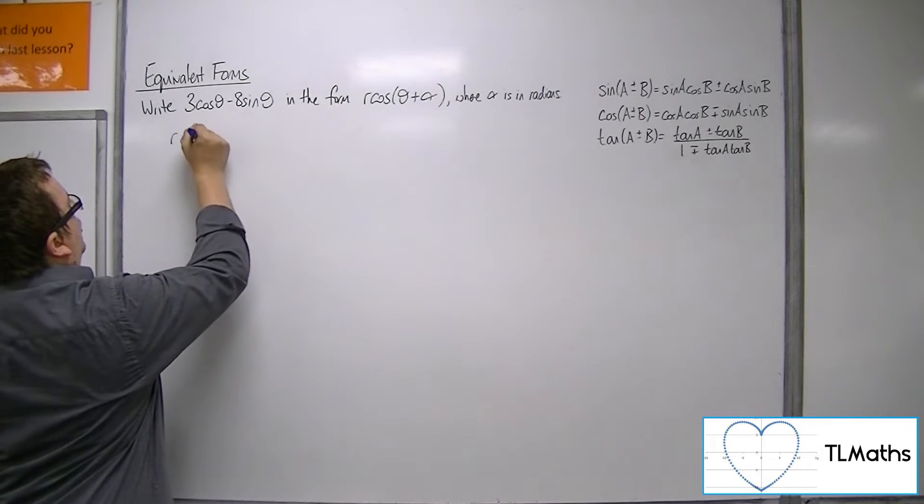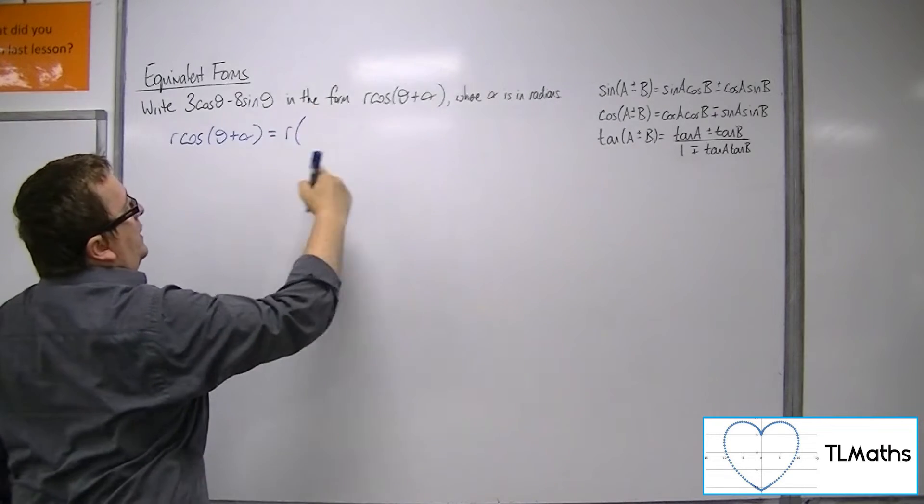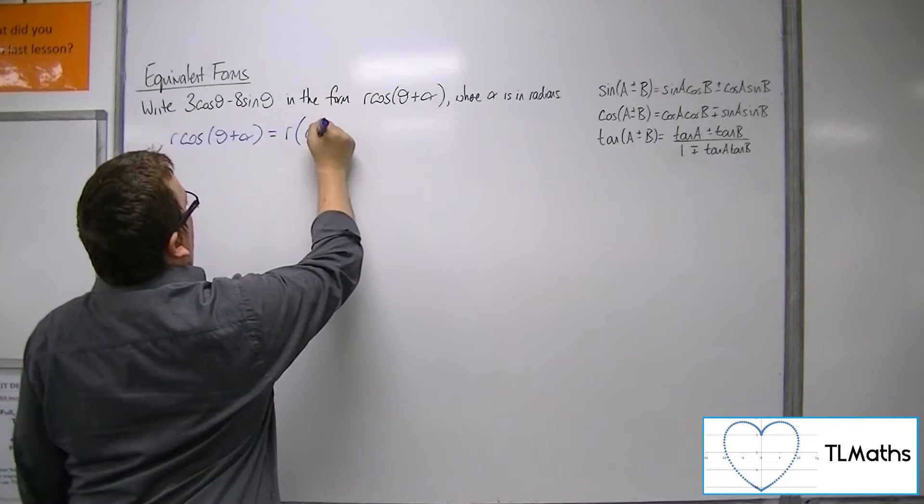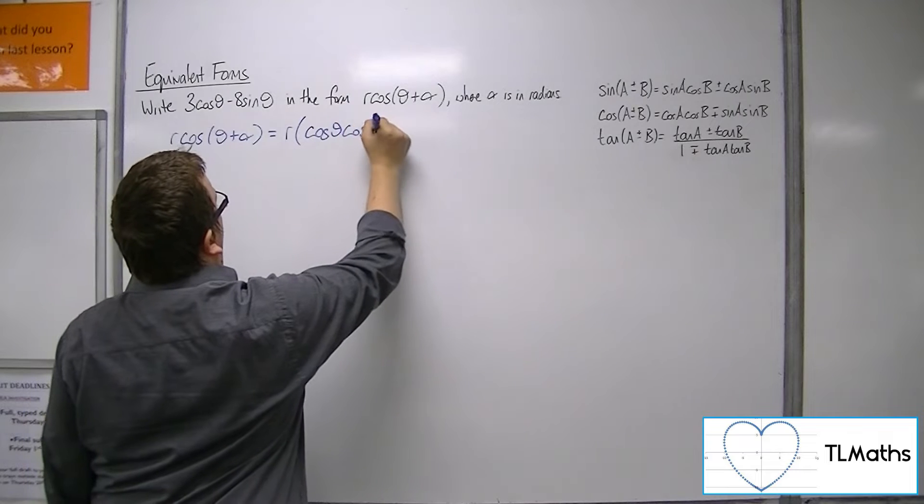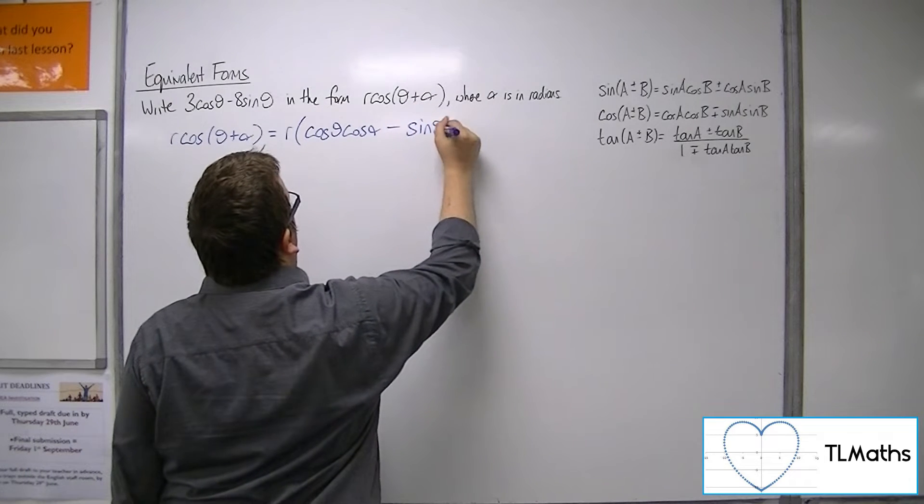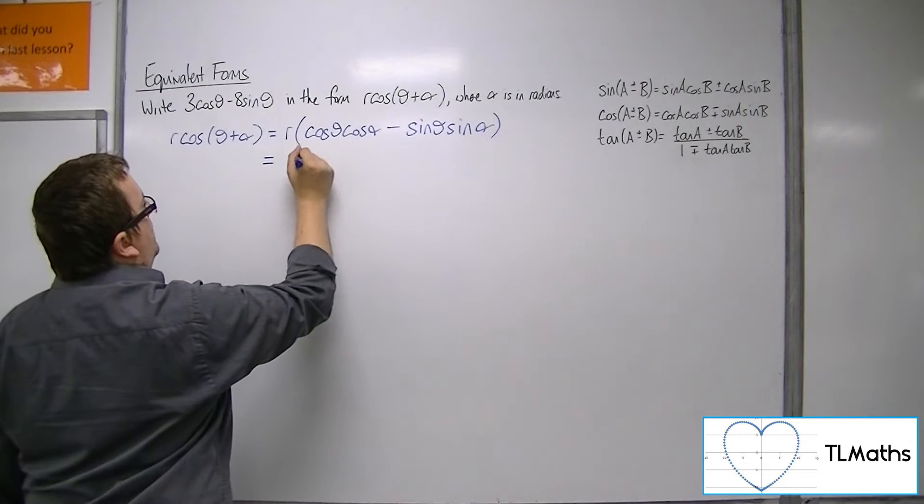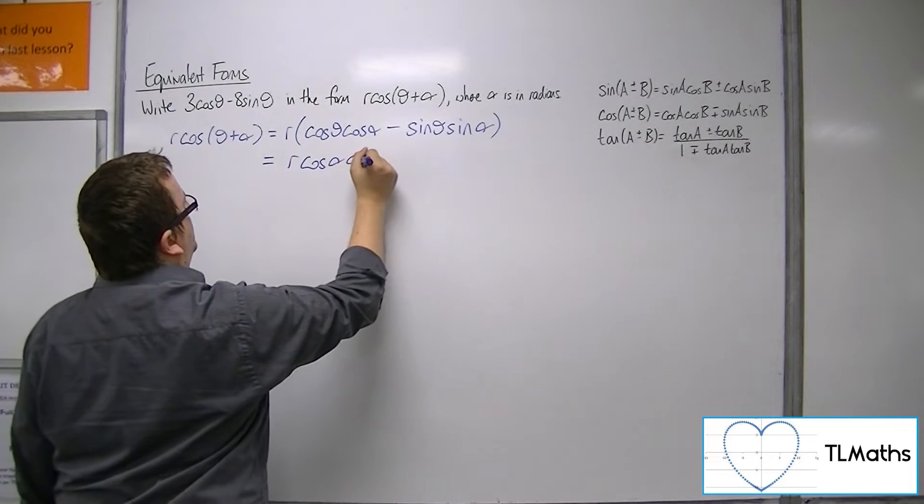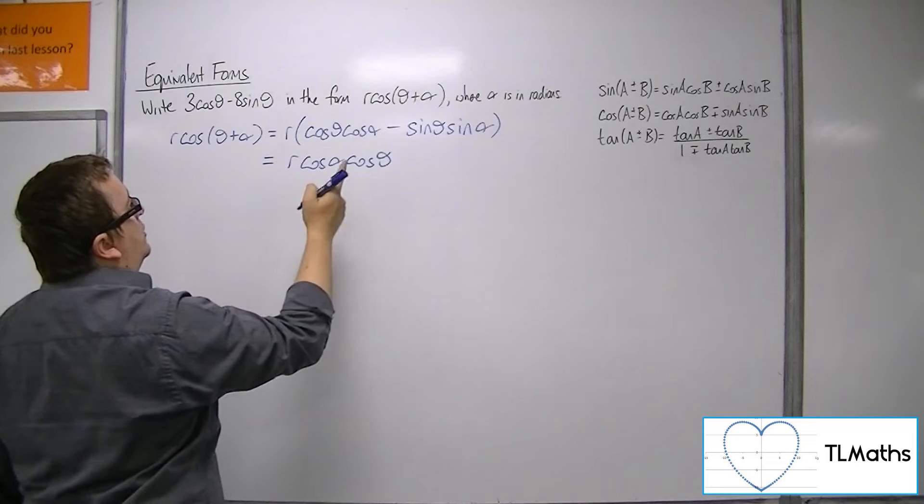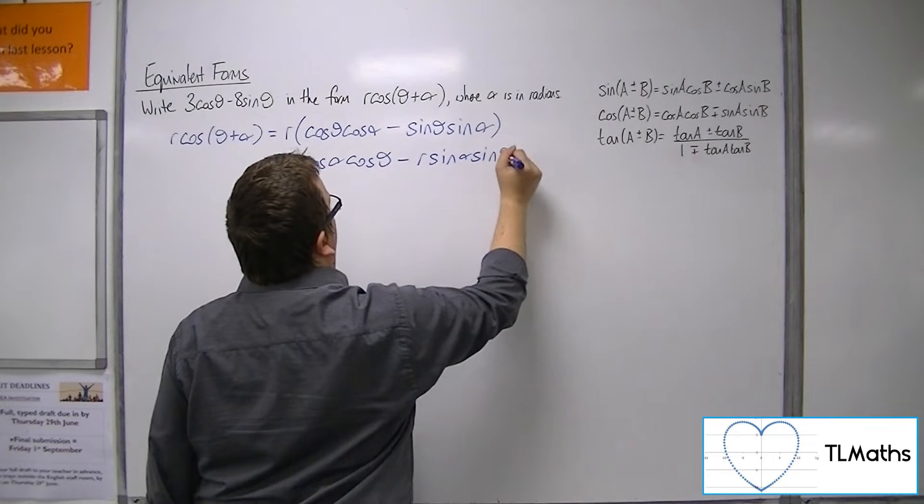So r cos theta plus alpha, using the compound angle formulas, will be cos theta cos alpha minus sin theta sin alpha. So r cos alpha, multiplying through and bringing the alphas to the front, we will get r cos alpha cos theta minus r sin alpha sin theta.